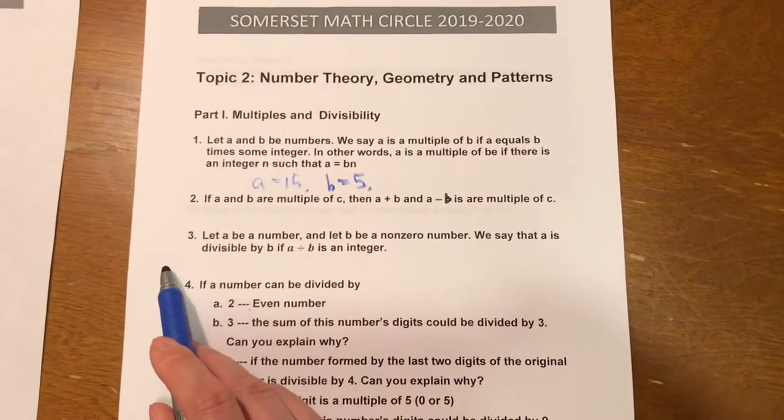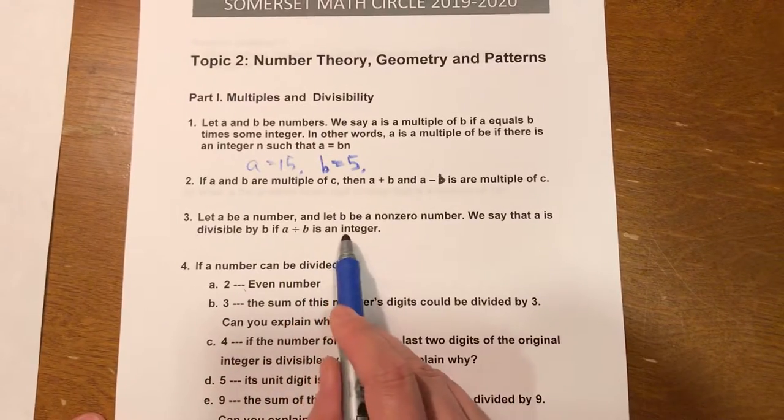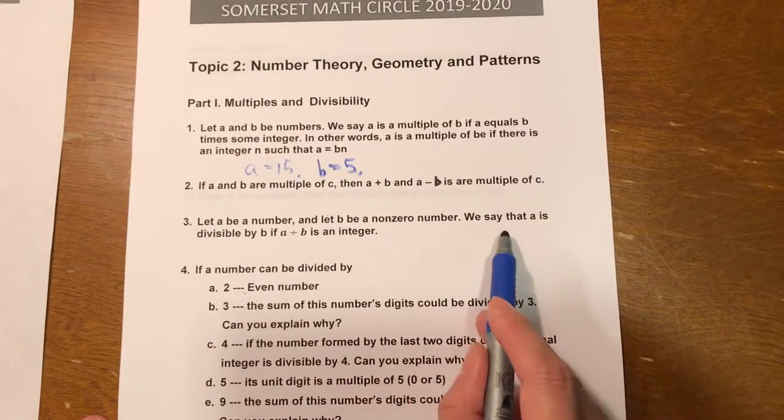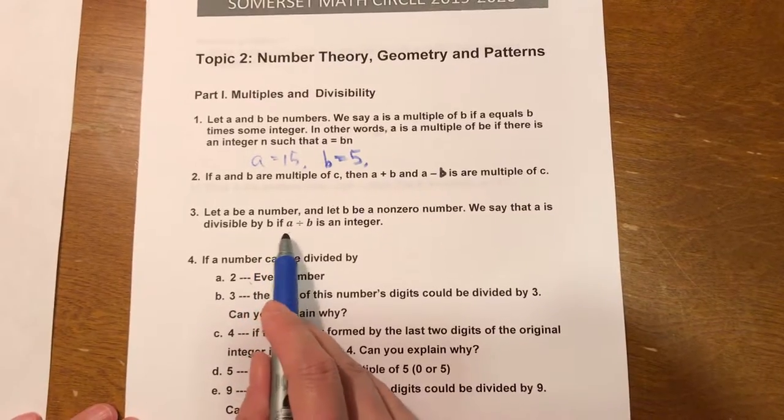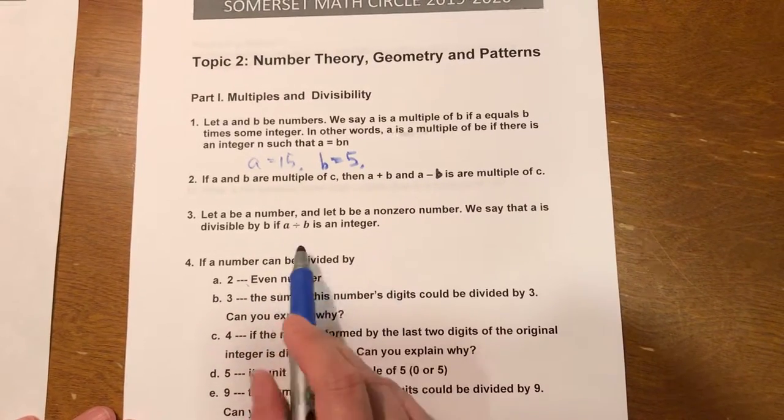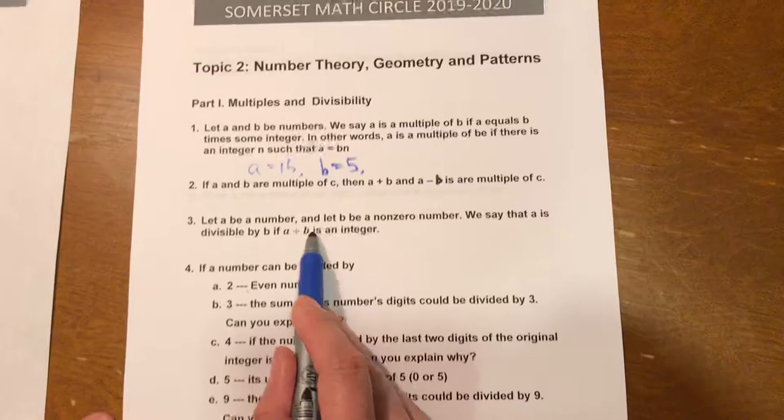Number 3, let A be a number and let B be a non-zero number. We say that A is divisible by B if A divided by B is an integer. That says A is a multiple of B.